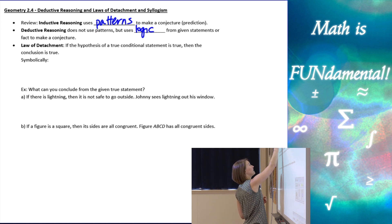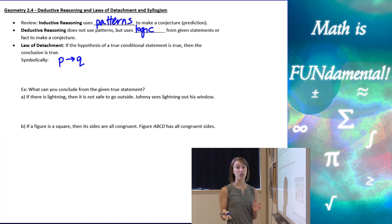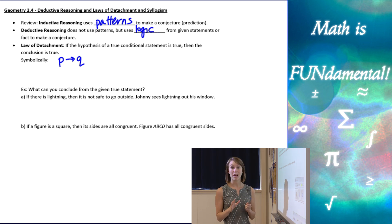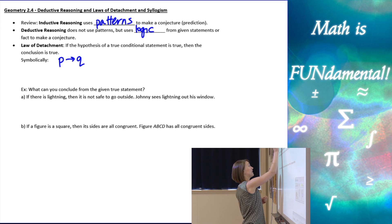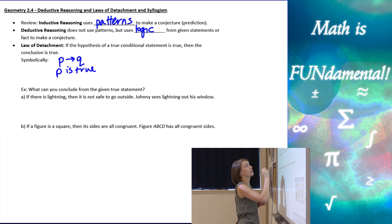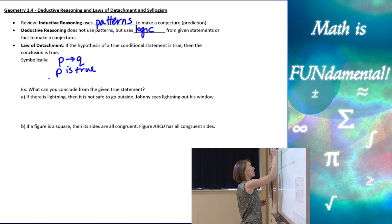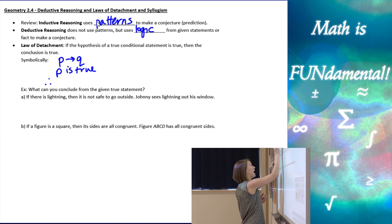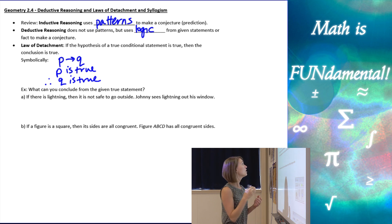Symbolically, what that means is I have to be given a conditional statement — if P then Q — and that has to be a true statement. I also have to know that P is true or that P is given. If I have those things, then the three little dots, which mean 'therefore,' I can conclude that Q is true. That's the law of detachment symbolically.